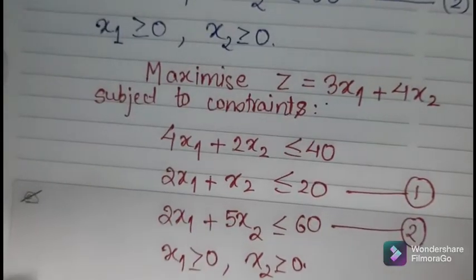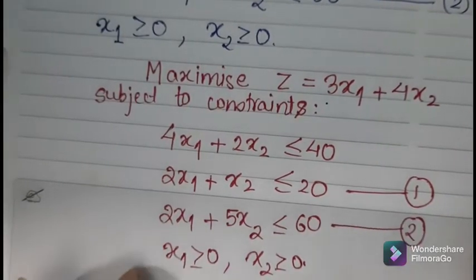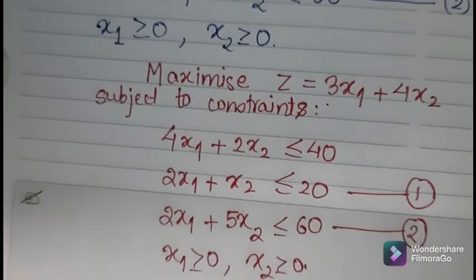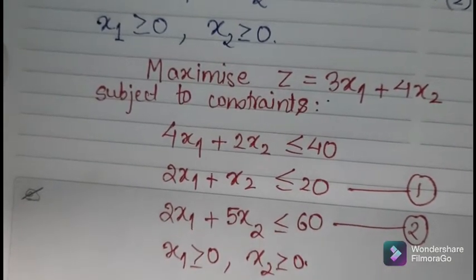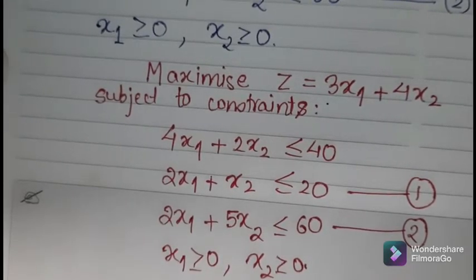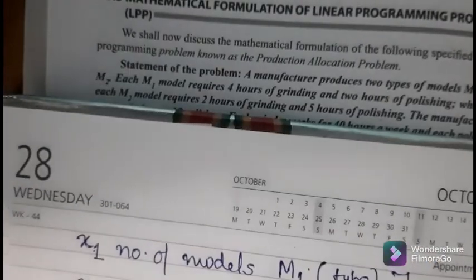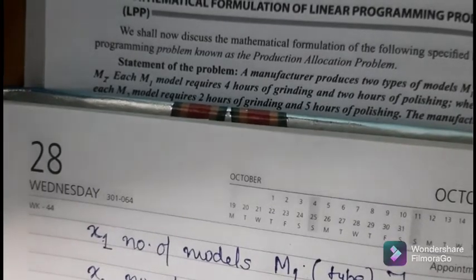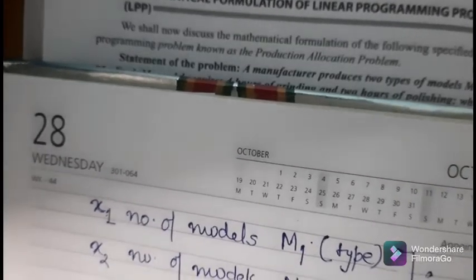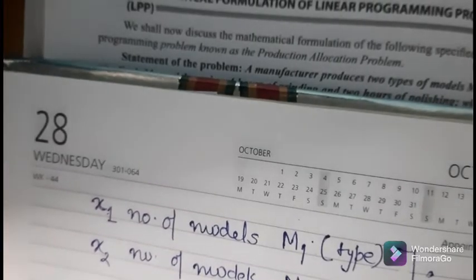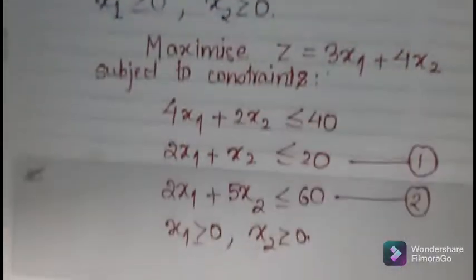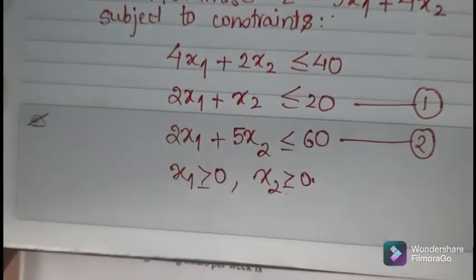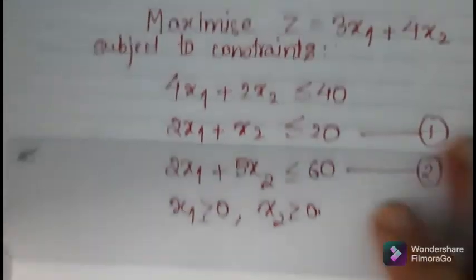Now we have to find the values of X1 and X2. This time I am only explaining how we formulate a linear programming problem mathematically — how we formulate an LPP problem. You have to find X1 and X2 to get the maximum value. The conditions X1 ≥ 0 and X2 ≥ 0 are called non-negativity restrictions. This is how we formulate an LPP problem.